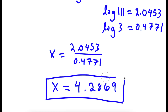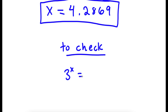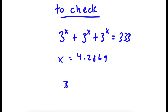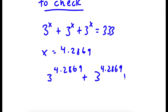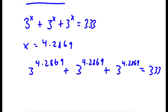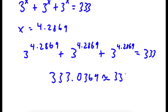So x approximately 4.2869 is my answer. Now to check: 3 to the power of 4.2869 plus 3 to the power of 4.2869 plus 3 to the power of 4.2869. If you add up all these you get approximately 333.0369, which is approximately equal to 333. So this confirms our answer is correct.